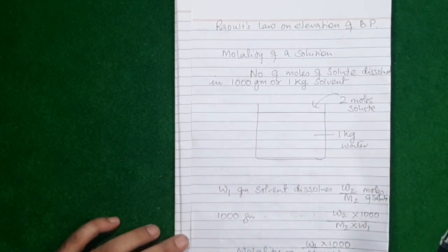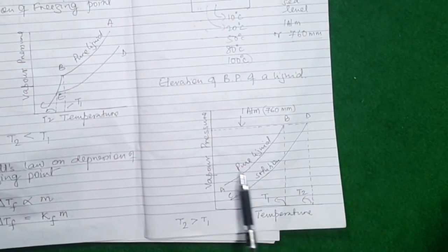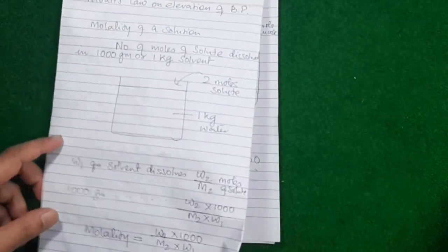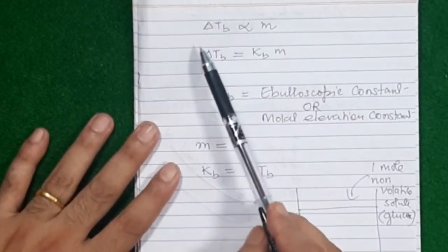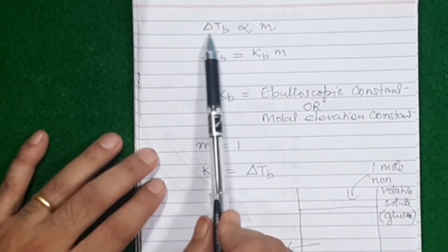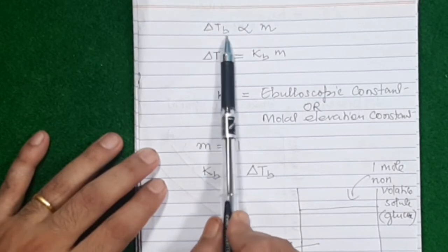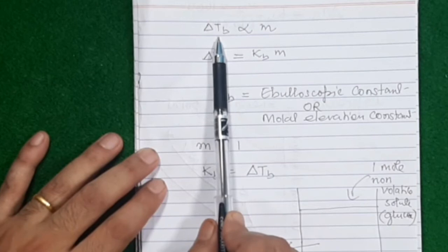Now let's state Raoult's law on elevation of boiling point. Elevation of boiling point is the increase in boiling point of any liquid when you prepare its solution. Raoult's law states that delta Tb — the elevation of boiling point — is neither the boiling point of the pure liquid nor the boiling point of the solution. It is the amount by which the boiling point increases.